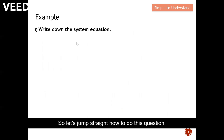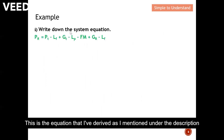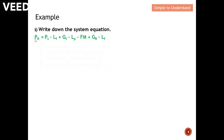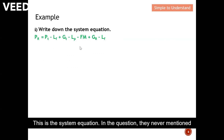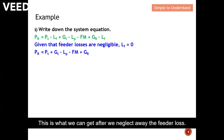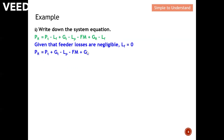The first task is to write down the system equation. This is the equation I derived — you can see how under description item number one. The question never mentions cable loss or feeder loss, so we can neglect them. After neglecting feeder loss we derive this simplified equation — item one we can ignore, item two we can ignore.